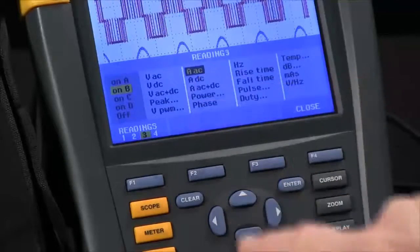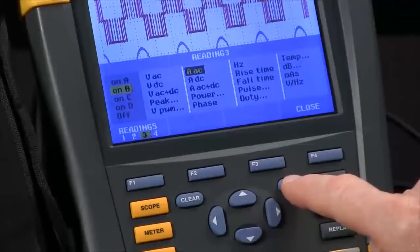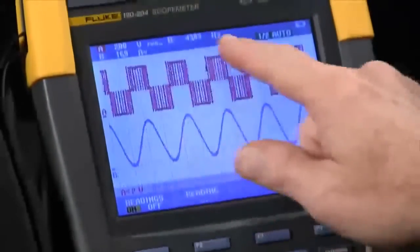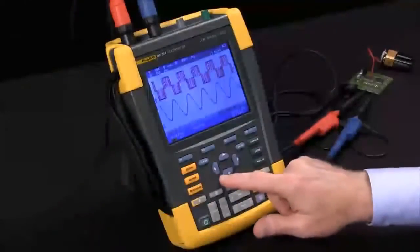In this case, we'll go with amps AC. We'll hit Enter. And now you can see three readings up here in the top of the screen. We're ready to start a recording.